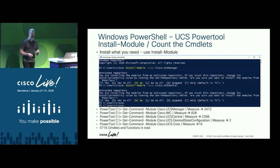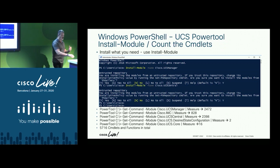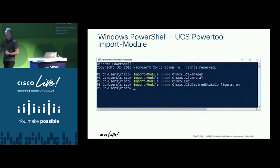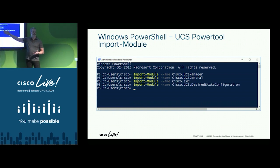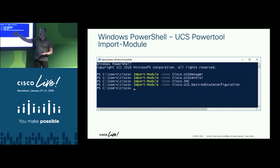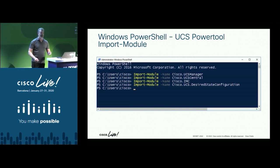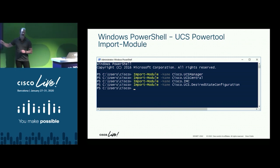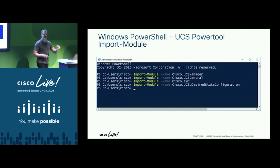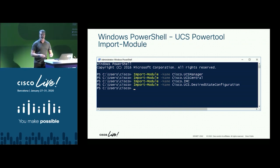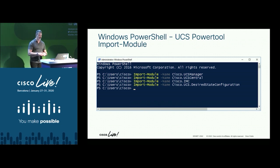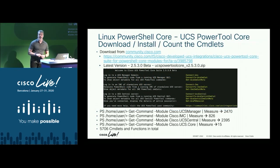You install the module, it pulls it down, and when you want to use it you import the module — import for UCS Manager commandlets, Central, IMC, or for desired state configuration commandlets. DSC is not as popular as Microsoft hoped, but we have commandlets that help you generate code you can turn into a managed object format for Microsoft DSC. So: install it, import it, and use it. That's for Windows PowerShell.